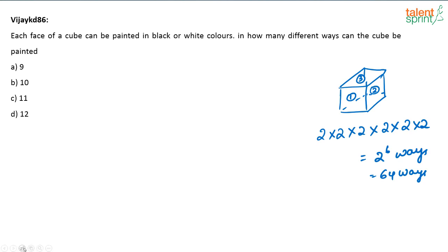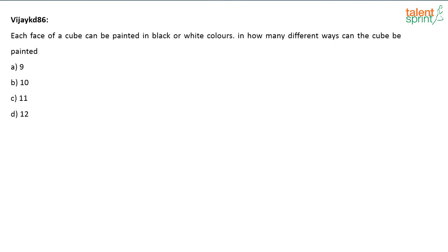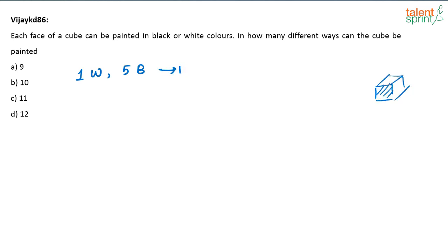But here nothing like that is mentioned, so we assume the sides of the cube are not distinguishable. In that case, if I paint one side white and the remaining five sides black, there is only one way to do it. Because the sides are not distinguishable — I'm not labeling them side 1, side 2, and so on. Any one side painted white and the remaining black — that's all. There is only one way.